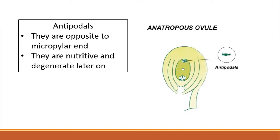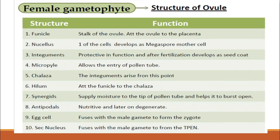The antipodal cells are three cells present towards the chalazal end of the embryo sac, opposite to the micropylar end. They are nutritive in function but eventually degenerate. They do not play a significant role in the development of the female gametophyte or fertilization.